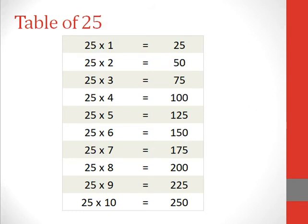Table of 25. 25 1s are 25, 25 2s are 50, 25 3s are 75, 25 4s are 100, 25 5s are 125.